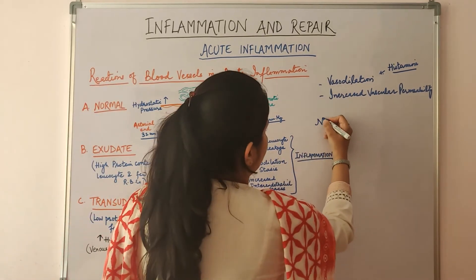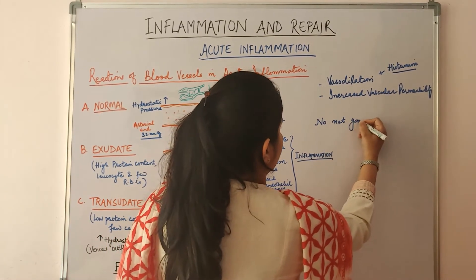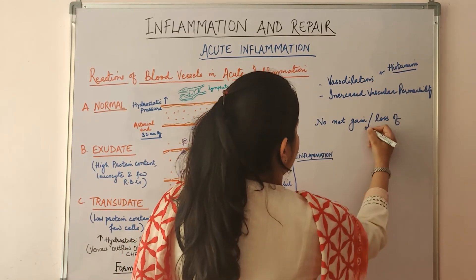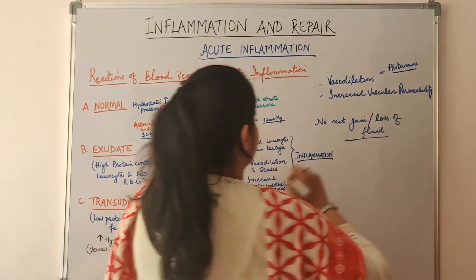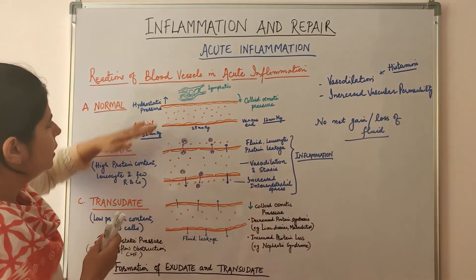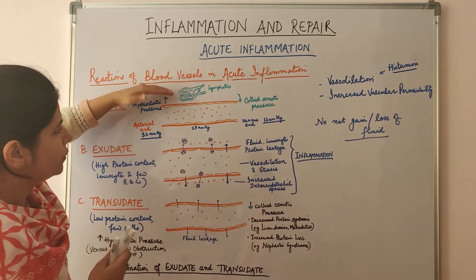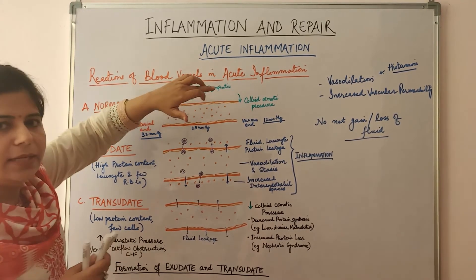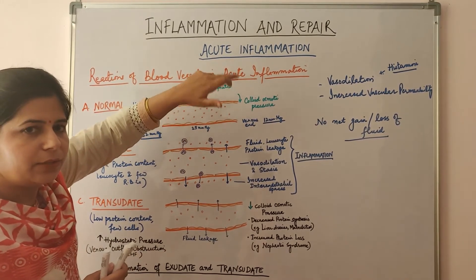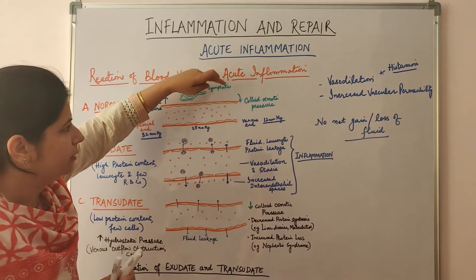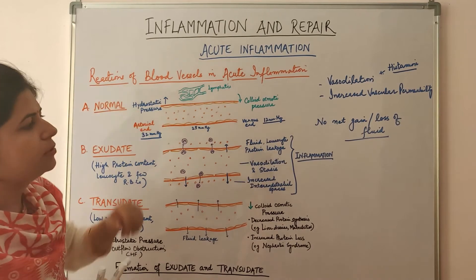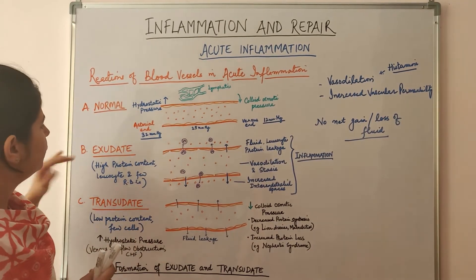Normally there is no net gain or loss of fluid from the circulation. Even if there is a small loss of fluid into the interstitial tissue, it is drained by the lymphatics to the thoracic duct and then to the left subclavian vein, ultimately returning to the circulation. So there is no net gain or loss of fluid.